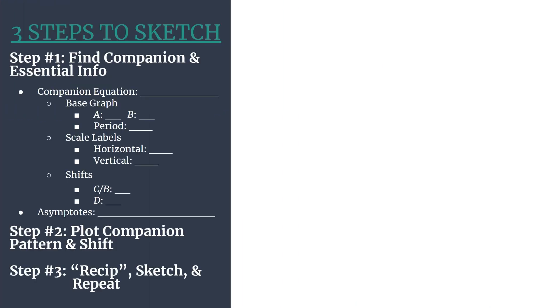Here's our quick outline for our method. Step 1, we'll find the companion equation and all the essential information that goes with it. The companion equation is simply the same equation but just the reciprocal function, so we'll replace the secant with cosine. Step 2 will be all about lightly plotting our companion pattern and taking care of the shifts. And step 3 is that step where we'll transform this into the reciprocal graph, sketch it in, and repeat.